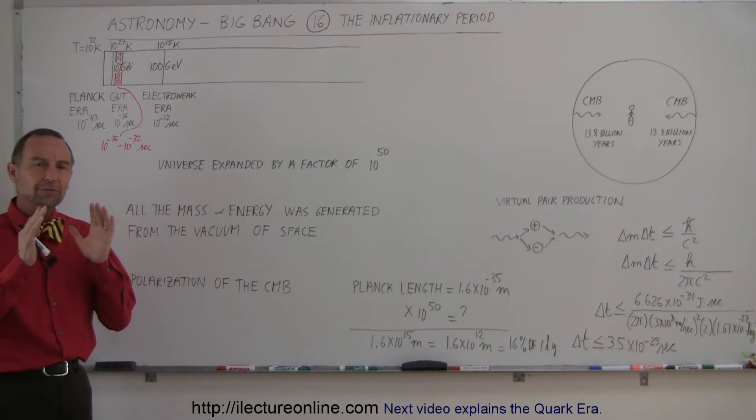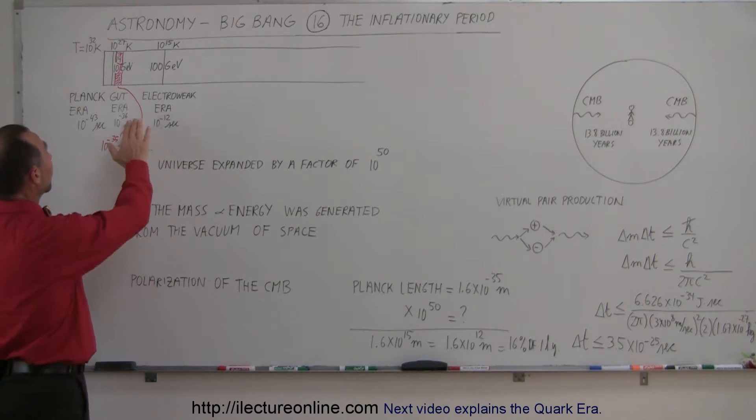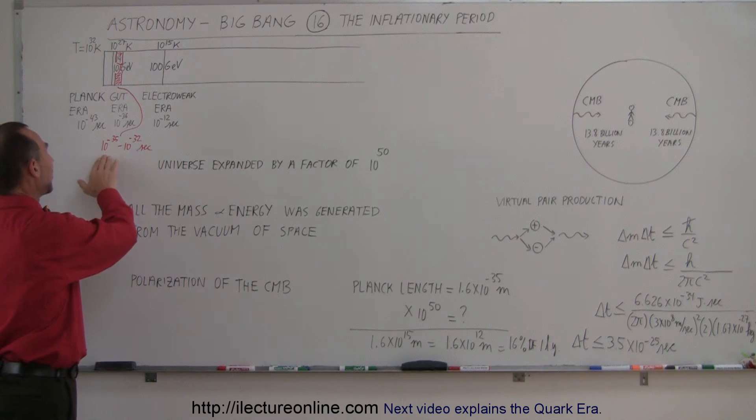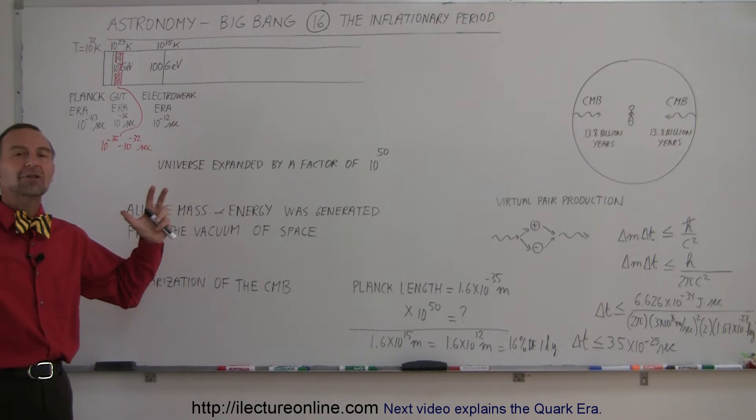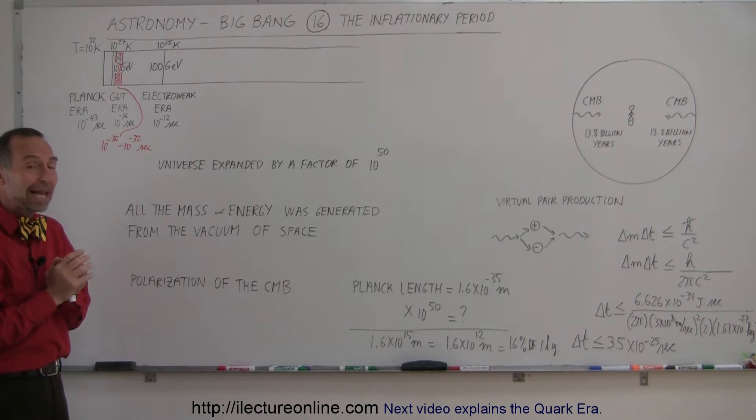It was assumed that at some point very early on in the age of the universe, which was determined to be somewhere during the electroweak era, somewhere between 10 to the minus 35 and 10 to the minus 32 seconds, the universe went through a super rapid inflation. Super rapid is really an understatement for what really happened.